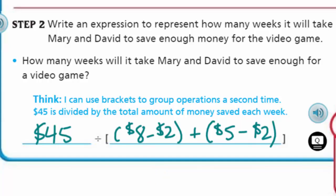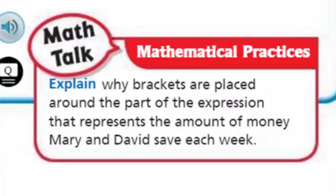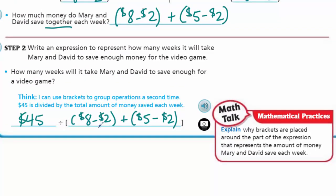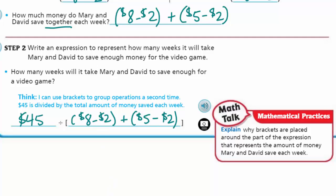Mary's saving a little more than David because she earns more - they spend the same amount on lunch. The parentheses group each person's savings separately, since six dollars is not the same as three dollars a week. The math talk asks: explain why brackets are placed around the part representing how much Mary and David save together each week - it's because the amounts are different.